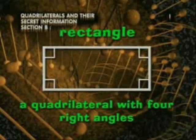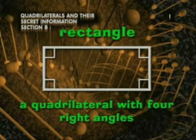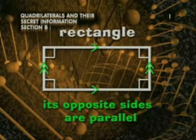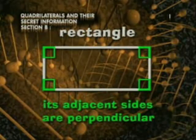A rectangle is a quadrilateral with four right angles. Because it has four right angles, its opposite sides are parallel, and its adjacent sides are perpendicular to one another.